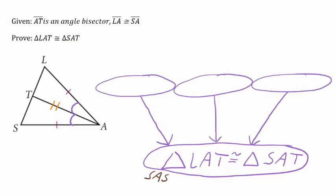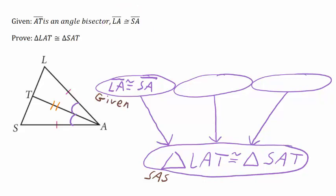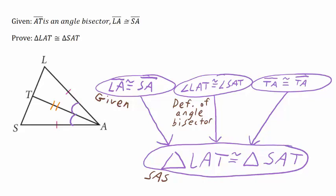Side, angle, side starts with the letter S, so let's do a pair of congruent sides for the first bubble. We know that line segment LA is congruent to line segment SA because it is given information. For the pair of angles in the second bubble: we know that angle LAT is congruent to angle SAT because line segment AT bisects angle A. To justify this statement we use the definition of an angle bisector. For our last statement we need another pair of congruent sides.